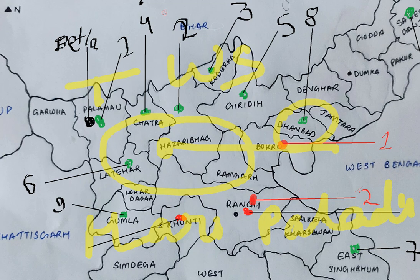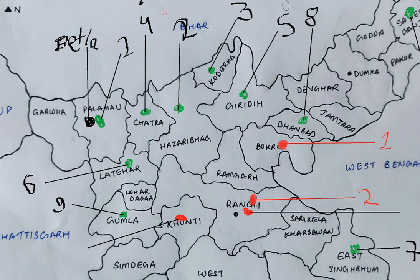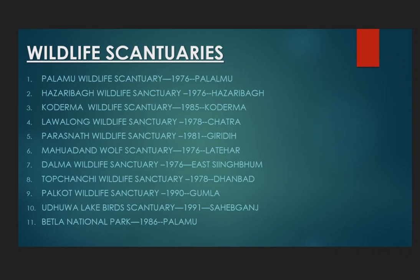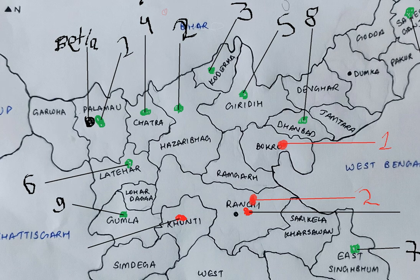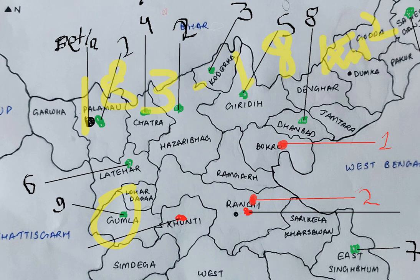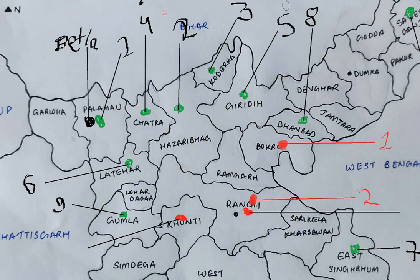The ninth is Palkot Wildlife Sanctuary in Gumla, established in 1990, with an area of 183.18 square kilometers. It has dry deciduous forest. Main animals include leopard, bear, porcupine, and birds such as peafowl and myna.